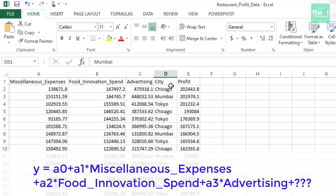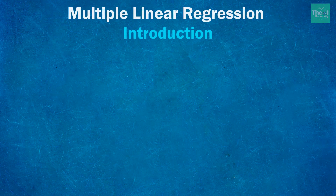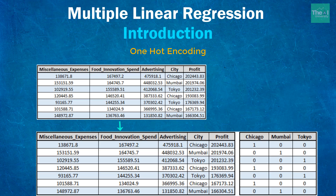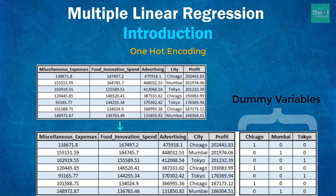City is a categorical variable, which we can't add directly in our regression equation. In order to include categorical variables in regression models, we make use of a technique called one-hot encoding. For every category, we essentially create a separate column, which we call a dummy variable. Since we have three categories of cities — Chicago, Mumbai, and Tokyo — we will create three dummy variable columns for each of these cities.